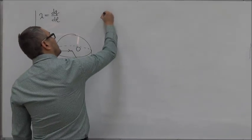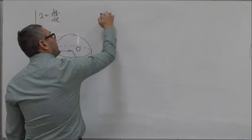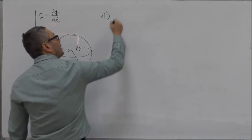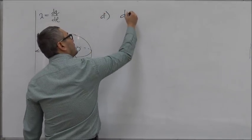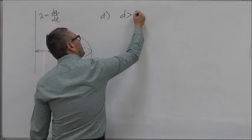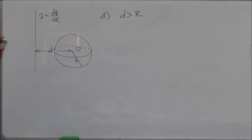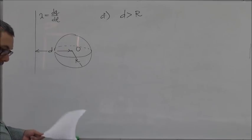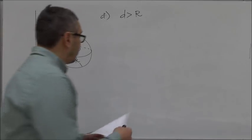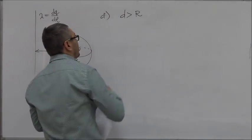The first one is when the distance D is greater than the radius. Well, if the distance D is greater than the radius, then there is no charge inside the sphere.